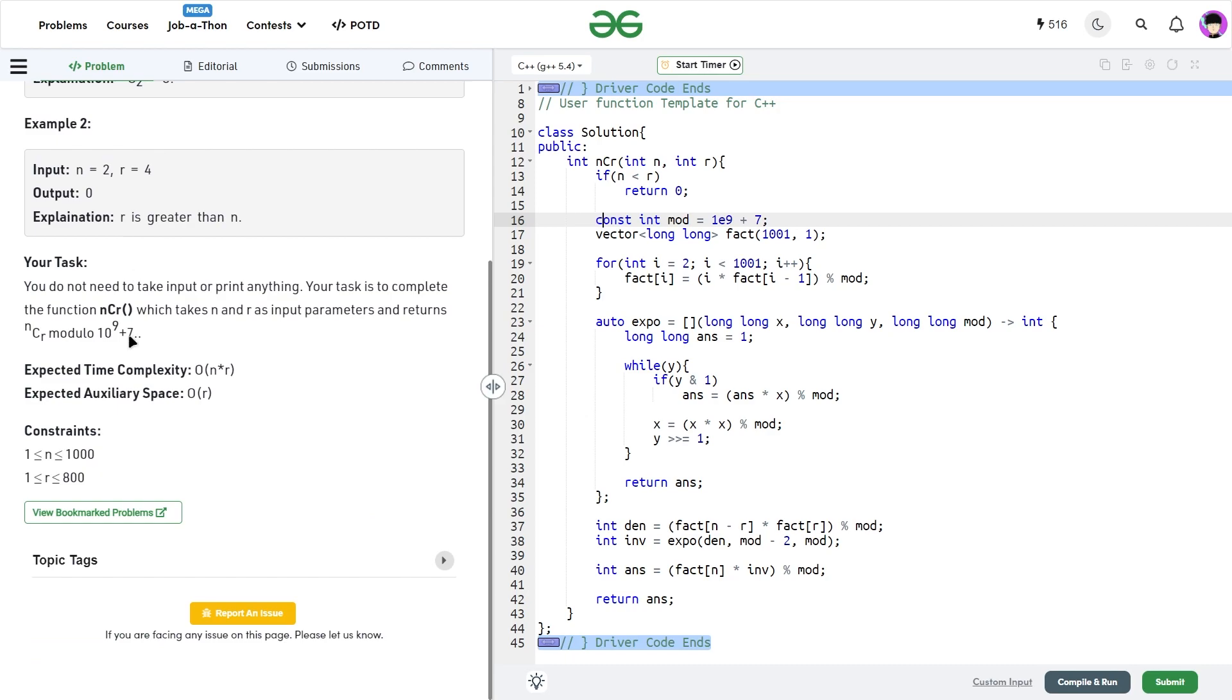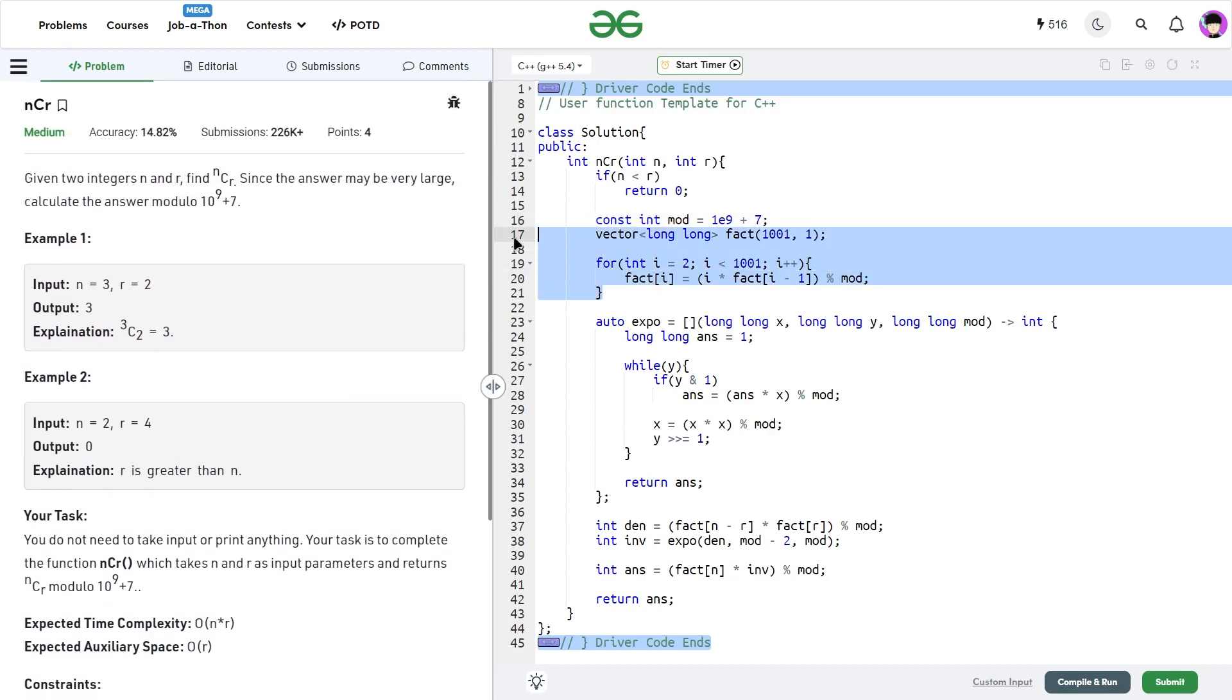Now I create a vector of factorials. This will be size 1001. We can take any value which should be greater than the maximum value that you need to know. In this case it was 1000 so I took 1001. I make a simple for loop in which I traverse through all the values and I can set factorial of i is i into factorial of i minus 1 and then taking its mod.